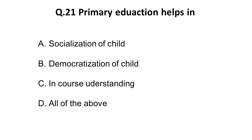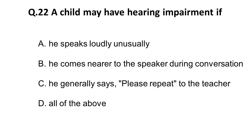The twenty-first question: primary education helps in what? Looking at all options — socialization of child: yes, it happens; democratization of child: it happens in the course of understanding; it also helps in understanding. So the correct answer is all of the above — primary education helps in all three options given.